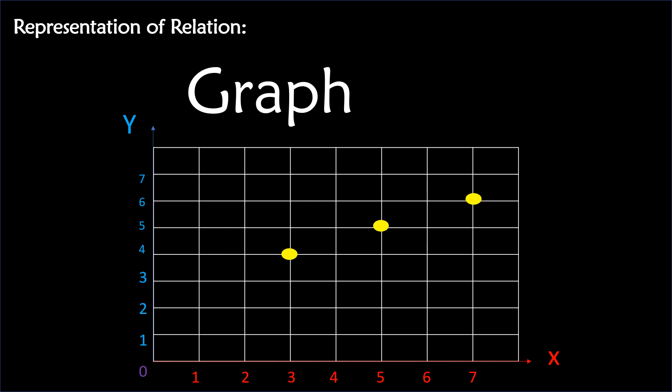The representation of relation using a graph is a graphical representation of a relation. It illustrates the relationship of the values of x and y. So here we have the points (3,4), (5,5), and (7,6).